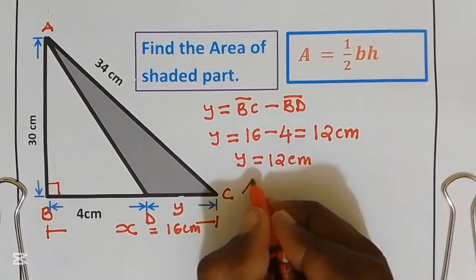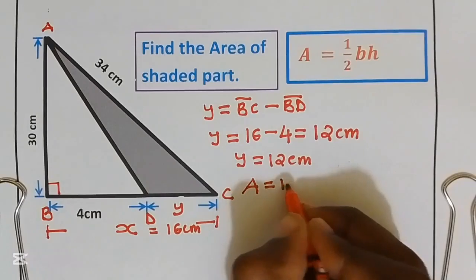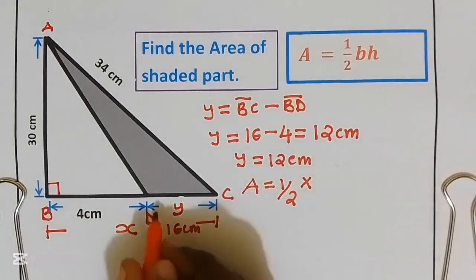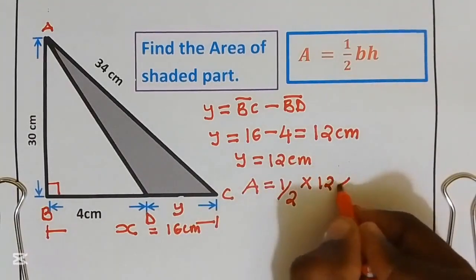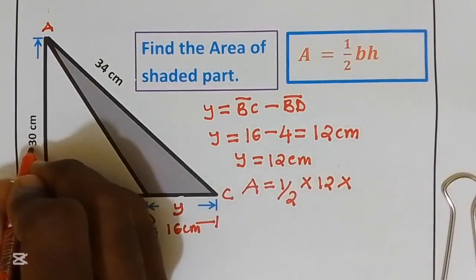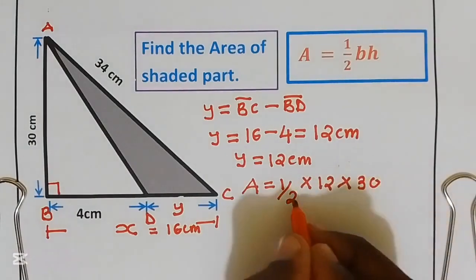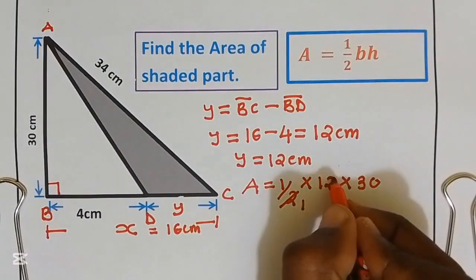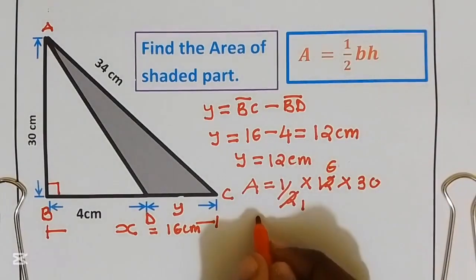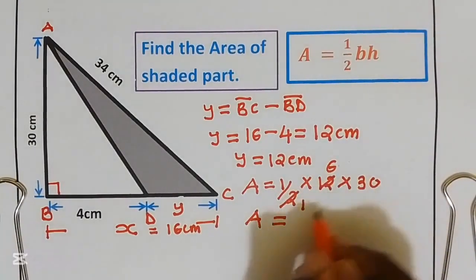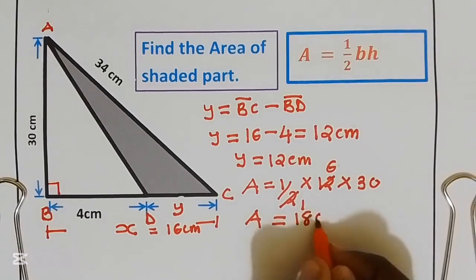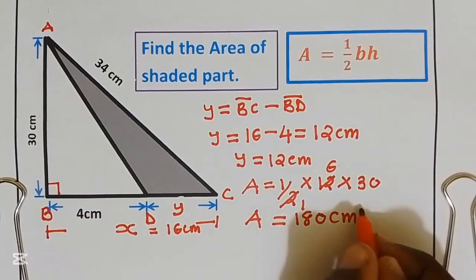Now our area equals one-half multiplied by the base, which is 12 centimeters, multiplied by the height, which is 30. Divide by 2, we get 6. Now our area equals 6 multiplied by 30, which gives us 180 centimeters squared.